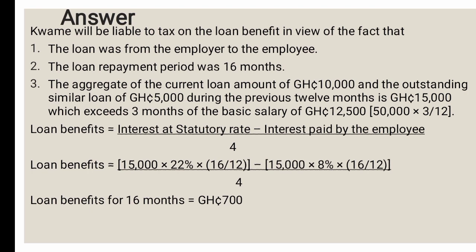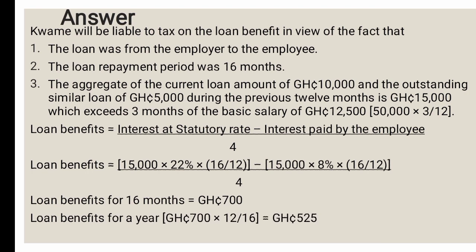Since this loan benefit of GHS 700 is for 16 months, we use ratio and proportion to find the annual benefit: GHS 700 × 12/16 = GHS 525. The annual loan benefit for Kwame Ajiman is GHS 525, which will be treated as a benefit in kind.